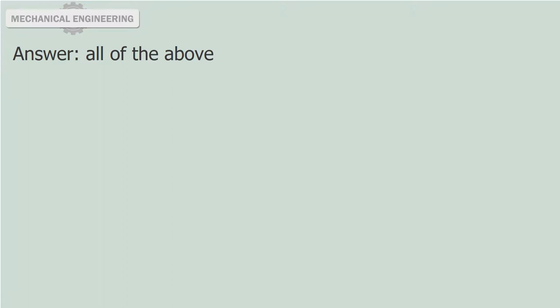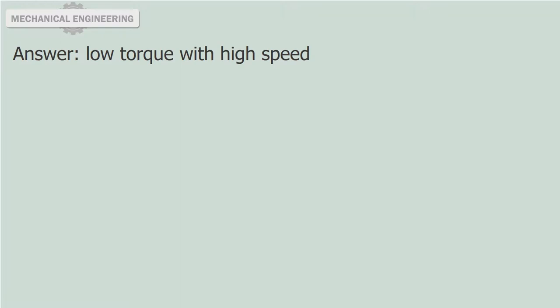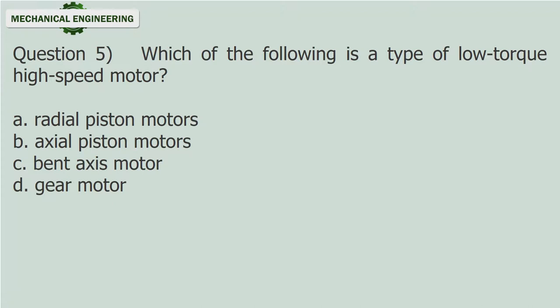Question 4: Motors used in high speed applications have: A) high torque with high speed, B) low torque with high speed, C) high torque with low speed, D) none of the above. Answer: Low torque with high speed.